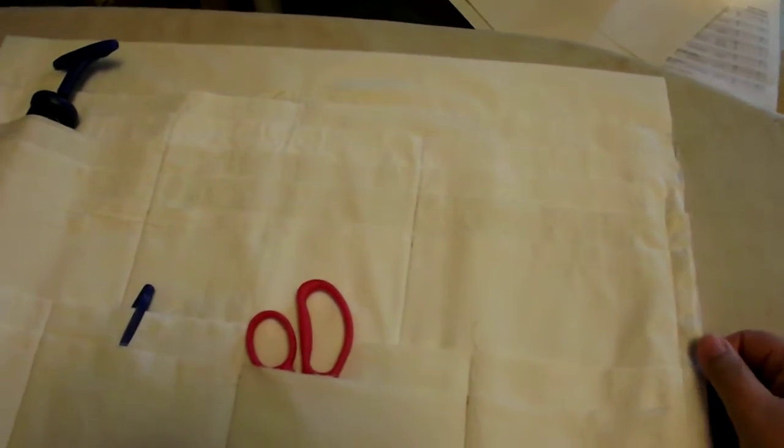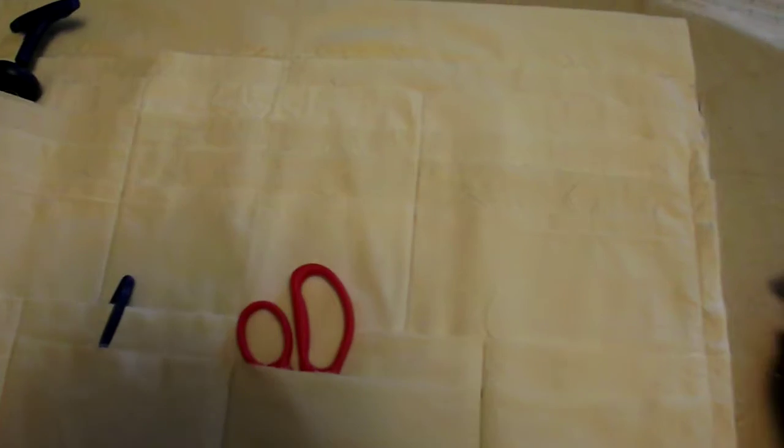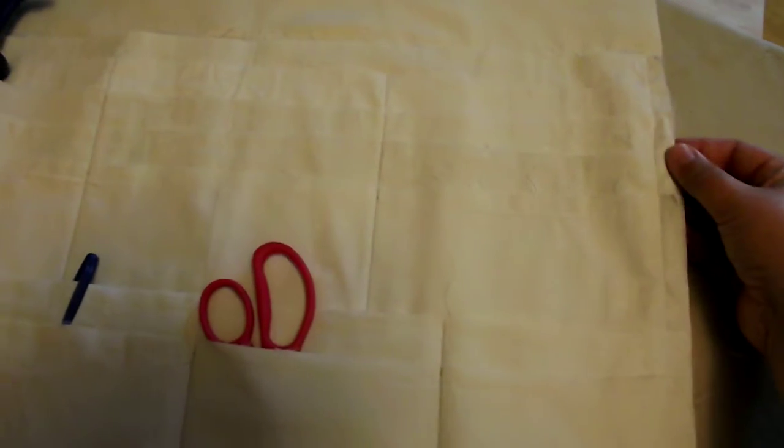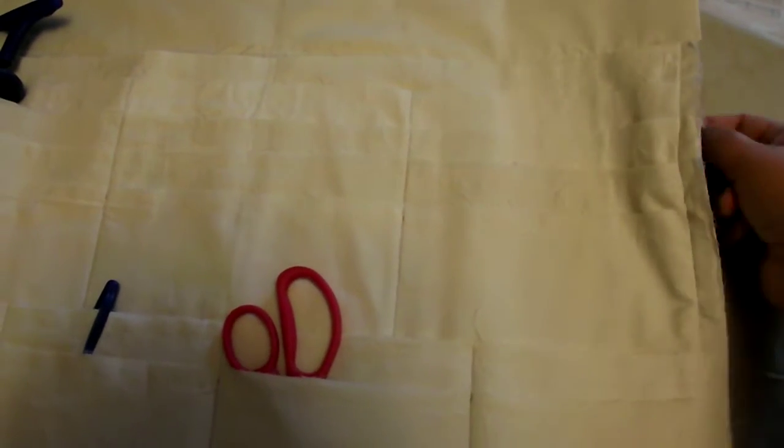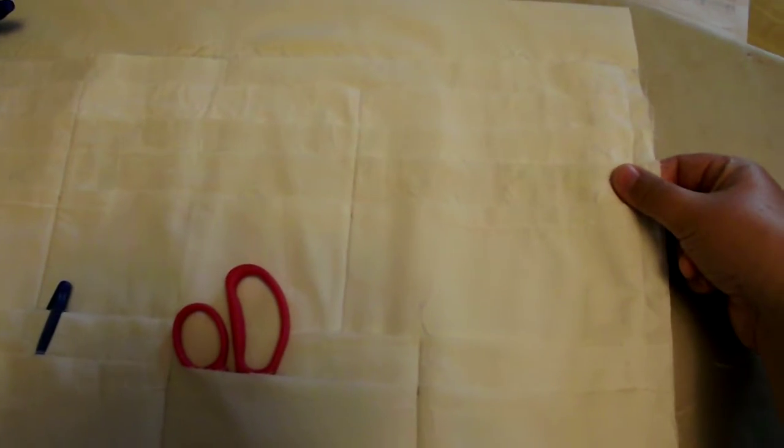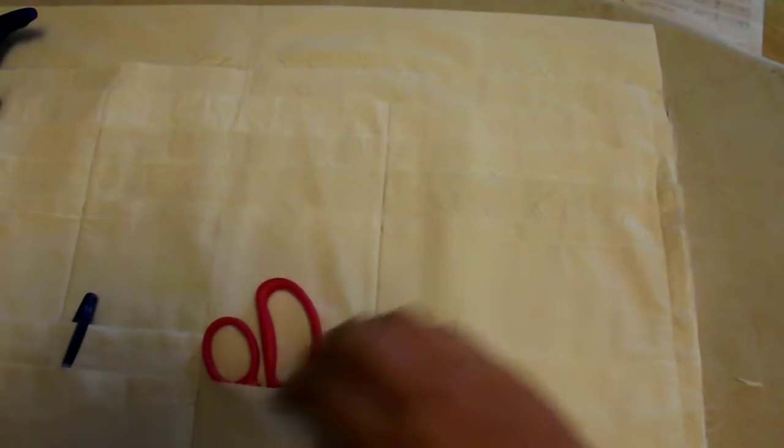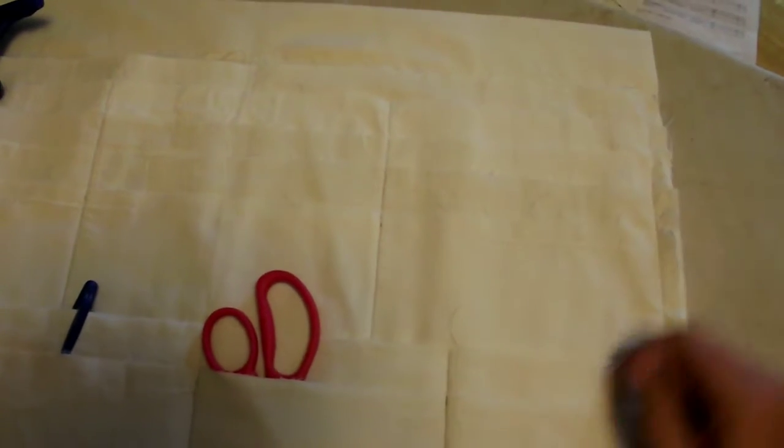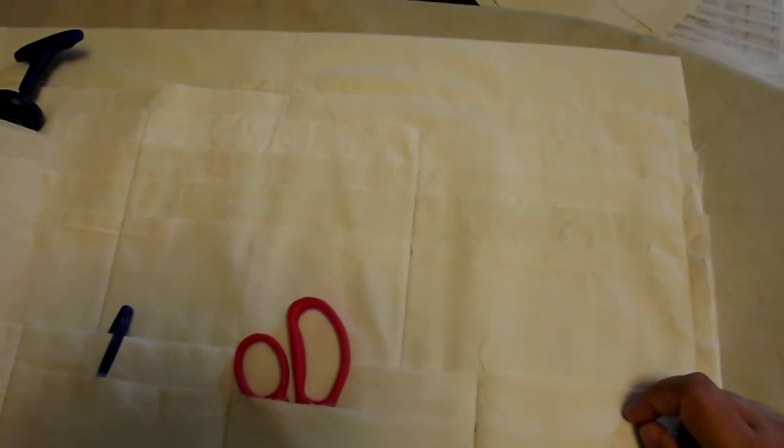One thing that I want to do that I didn't do on this sample, is put a, attach a couple little loops. And that way you can tether your scissors to a string or something, if you want to do that, or your keys.